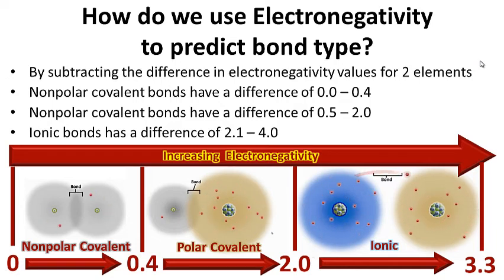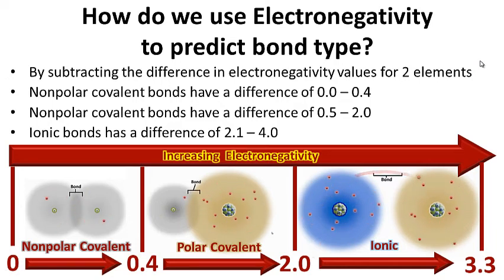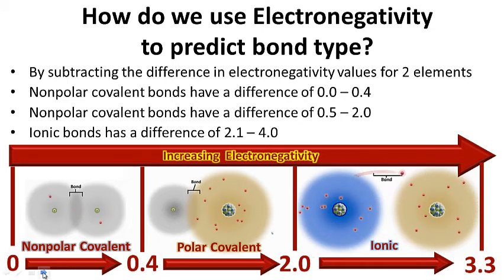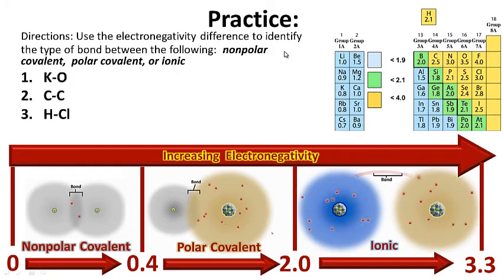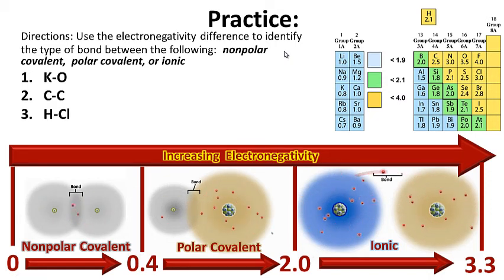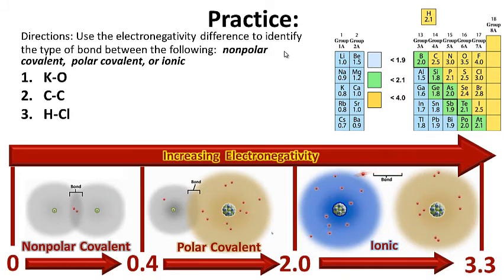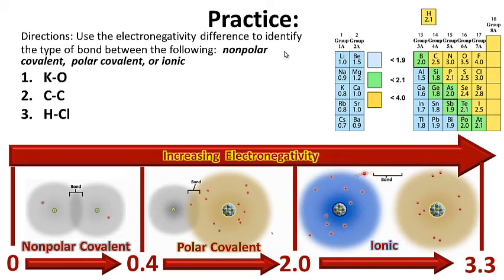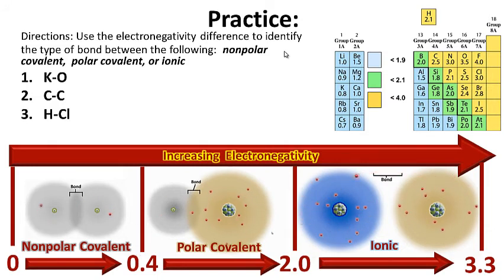For your notes: how do we use electronegativity to predict bond type? Question on the left-hand side, answer on the right-hand side. Now for practice: use the electronegativity difference to identify the type of bond — non-polar covalent, polar covalent, or ionic — for the following pairs. Go ahead and pause this while you work on questions one through three, then hit play when you're ready to check your work.